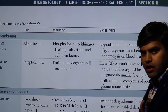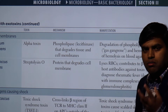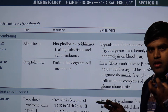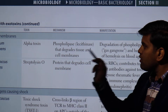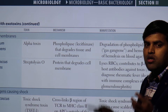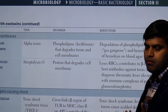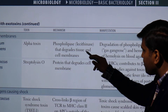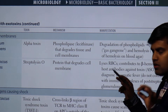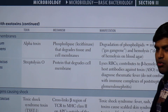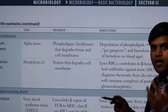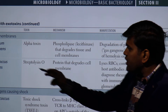When Clostridium perfringens grows on a blood agar plate, it produces a double zone of hemolysis. This is because the alpha toxin — acting as a phospholipase enzyme — lyses the RBCs in the blood agar. Clinically, because this toxin lyses the cell membrane and degrades tissue phospholipids, it causes myonecrosis and gas gangrene. This hemolysis pattern on blood agar serves as a laboratory demonstration of this toxin's activity.